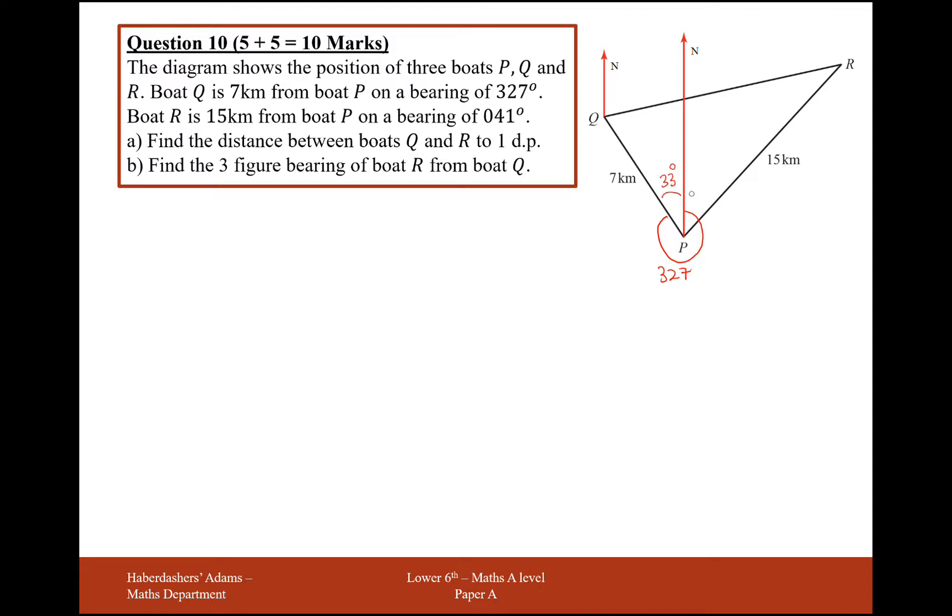The other bearing is on a bearing of 041, so that's from P round to R as a bearing of 041. Part a asks to find the distance between boats Q and R to one decimal place. So I'm thinking triangle here, we've got one side, the angle in between and the other side. This is screaming out to me to use the cosine rule.